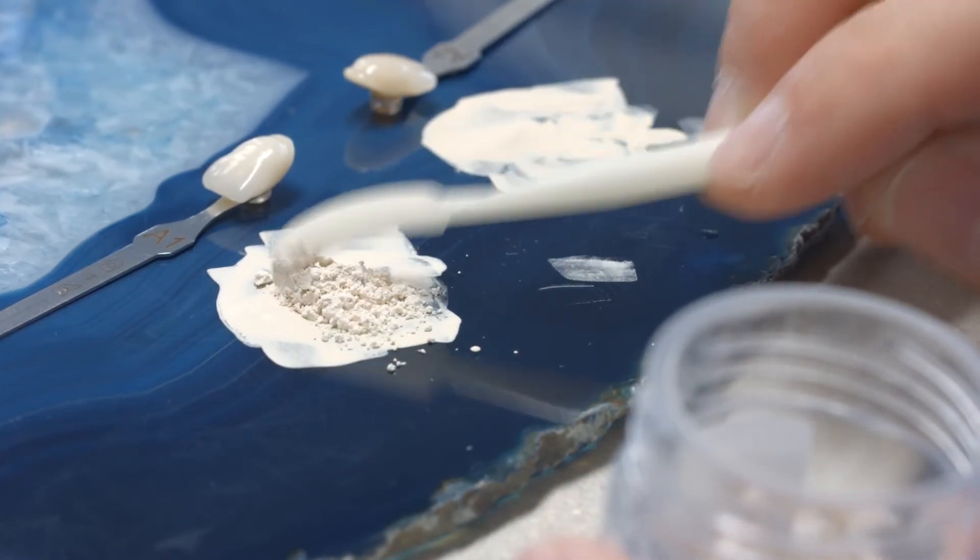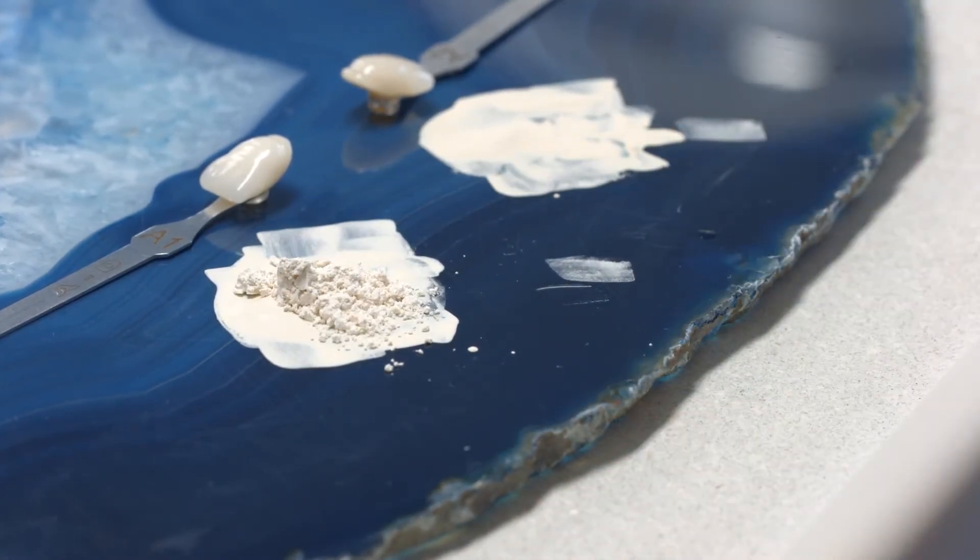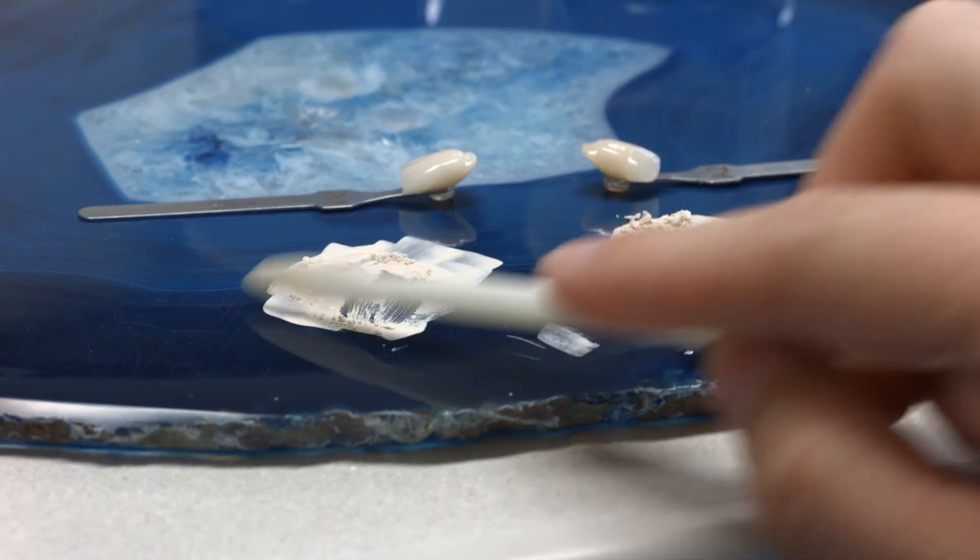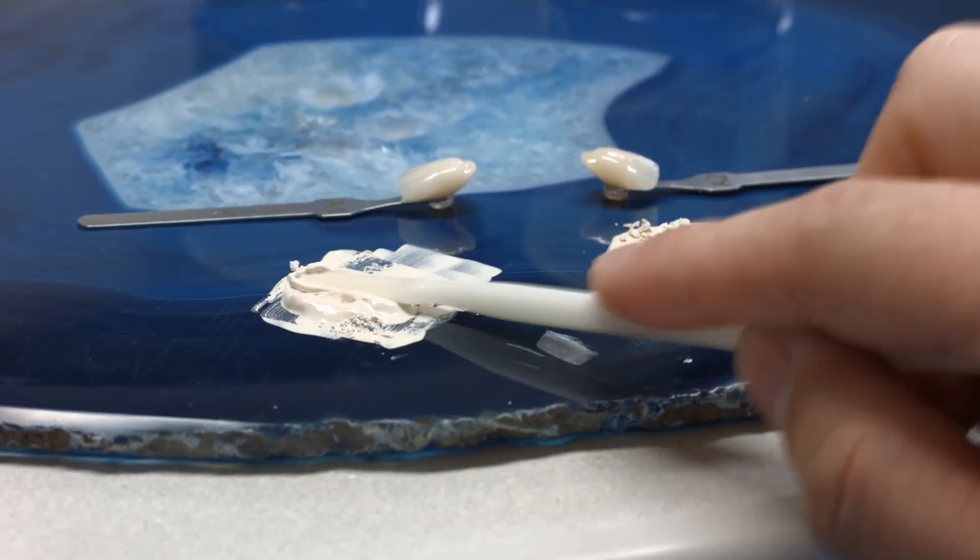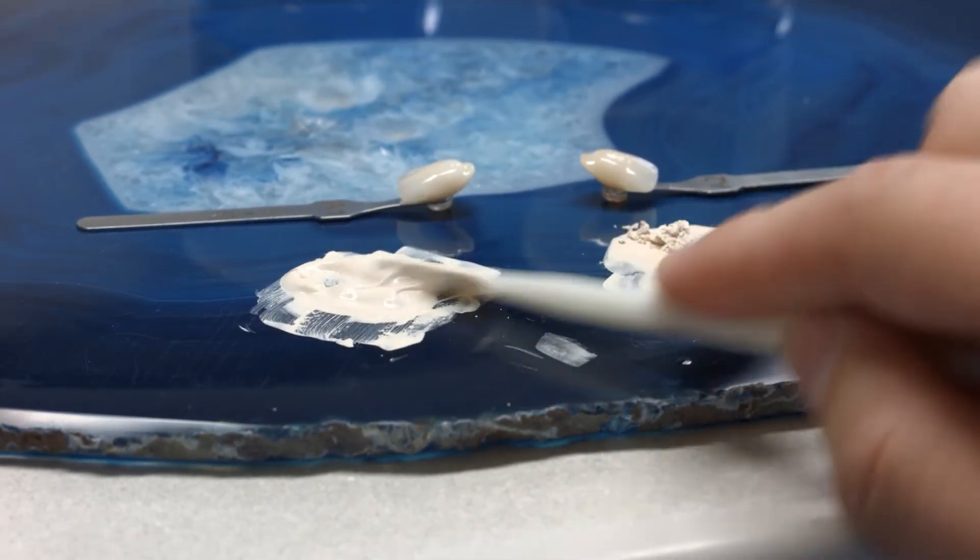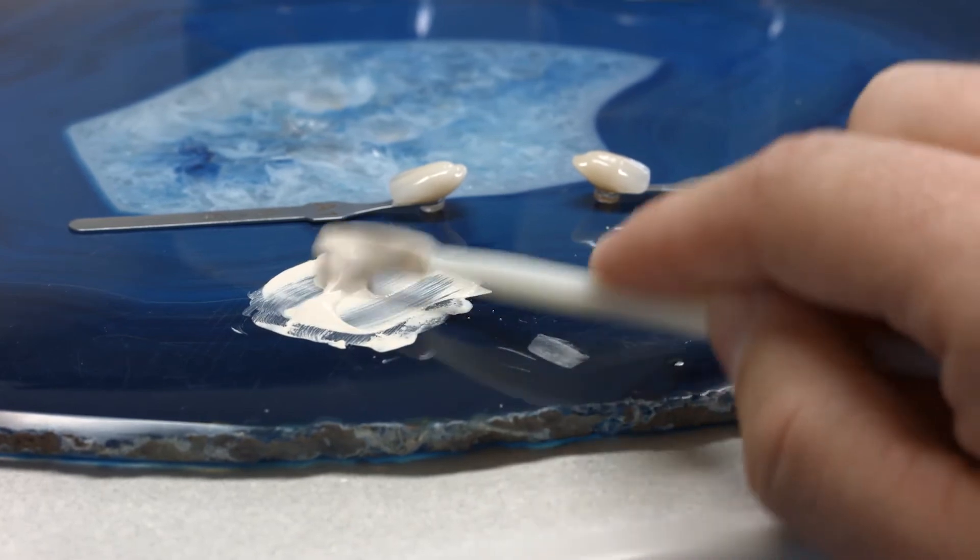Remove the amount of opaquer powder required for the covering layer from the jar and add it to the dried wash-opaquer residue on the mixing pad. Mix the opaquer powder to the desired consistency with some of the opaquer powder liquid.